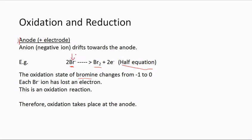Looking at oxidation states: in the bromide ion Br⁻ the oxidation state is −1. In bromine Br₂ the oxidation state is 0, since an element in its standard state has an oxidation state of zero.